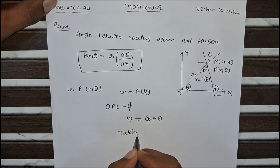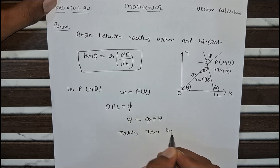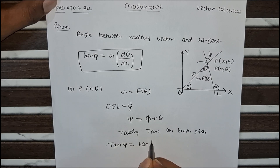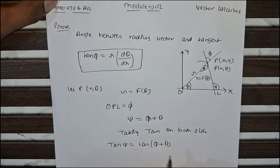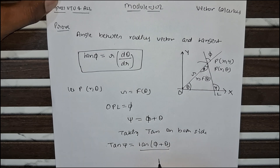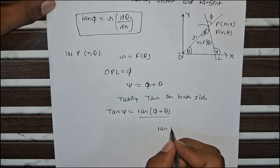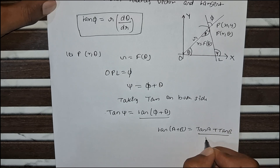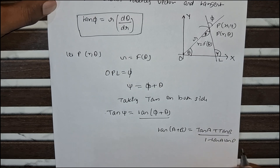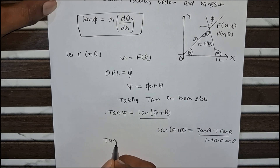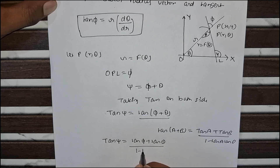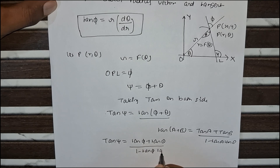Now we take tan on both sides of the equation ψ = φ + θ, so tan ψ equals tan(φ + θ). We use the identity tan(a + b) equals (tan a + tan b) divided by (1 minus tan a · tan b), where a is φ and b is θ.